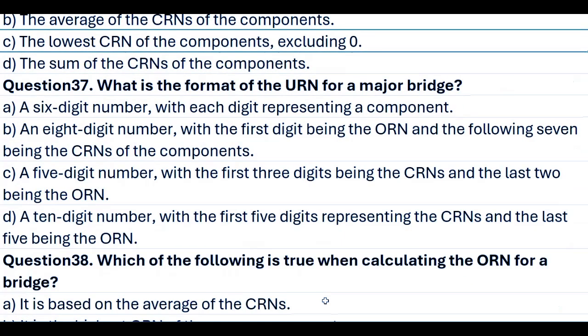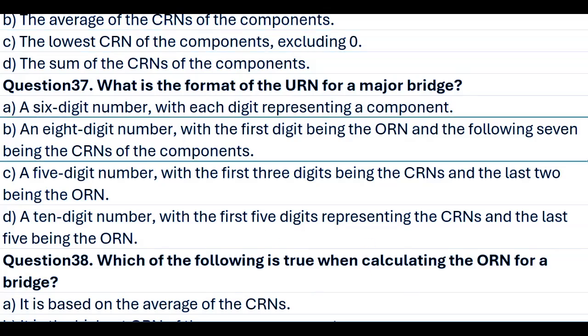Question 37. What is the format of the ERN for a major bridge? A. A 6-digit number, with each digit representing a component. B. An 8-digit number, with the first digit being the ORN, and the following 7 being the CRNs of the components. C. A 5-digit number, with the first 3 digits being the CRNs, and the last 2 being the ORN. D. A 10-digit number, with the first 5 digits representing the CRNs, and the last 5 being the ORN. Answer B. An 8-digit number, with the first digit being the ORN, and the following 7 being the CRNs of the components.